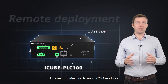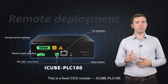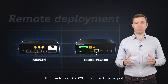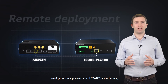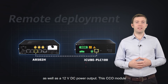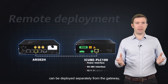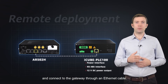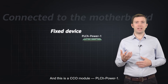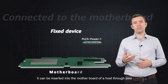Huawei provides two types of CCO modules. This is a fixed CCO module, IQPLC100. It connects to an AR502H through an Ethernet port, and provides power sockets and RS485 ports, as well as a 12-volt DC power output. This CCO module can be deployed separately from the gateway and connect to it through an Ethernet cable. And this is a CCO module, PLC H-Power 1. It can be inserted into the motherboard of a host through pins, and integrated with the motherboard to form one device.